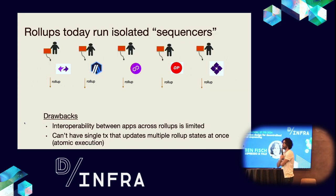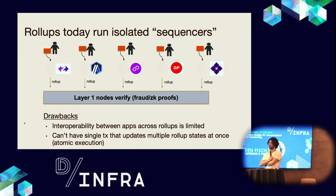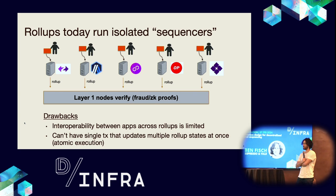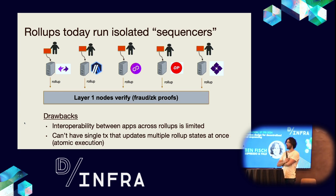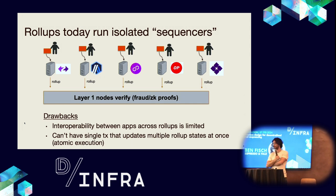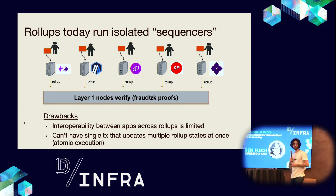Rollups today also run isolated sequencers. They effectively run very much as their own blockchains that ultimately settle to the same layer one at a delay. One of the drawbacks is that interoperability between applications across rollups is more limited. For example, you can't have a single transaction that updates multiple rollup states at once, which is also known as atomic execution.